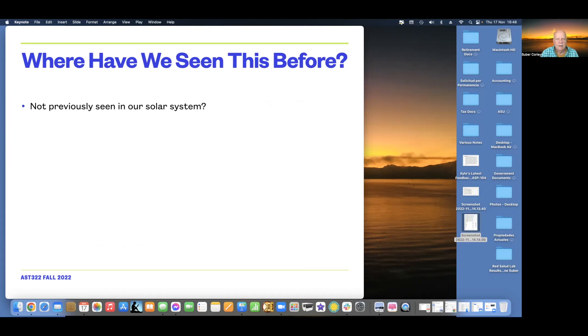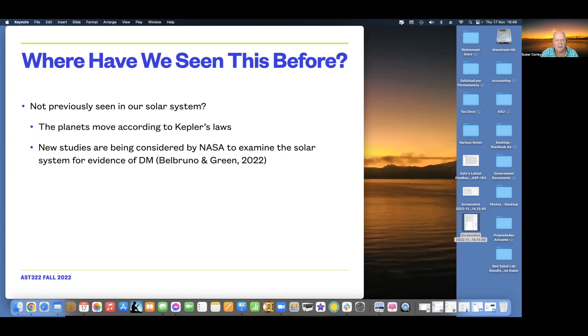Now, this is not really something that we have seen before, but we have previously understood that there is no dark matter in the solar system. The planets move according to Kepler's laws. It's nice and smooth, so there's no impact there. But some folks have begun to question this idea, and new studies are currently underway by NASA in conjunction with other folks to do an external view of the solar system to try to find out if there is evidence of dark matter, even within our galaxy.